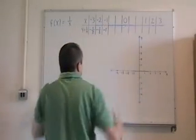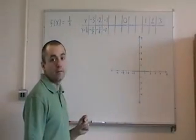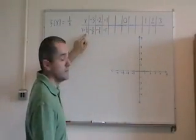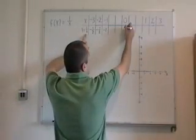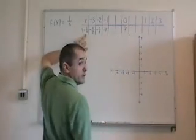When x equals 0, well, when x equals 0 we've got a problem, because 1 over 0 is undefined, and we can't do that. So I'll just put it with a question mark for the moment.